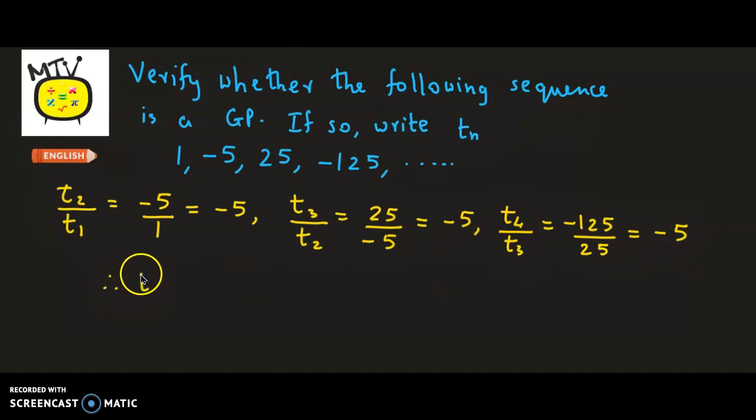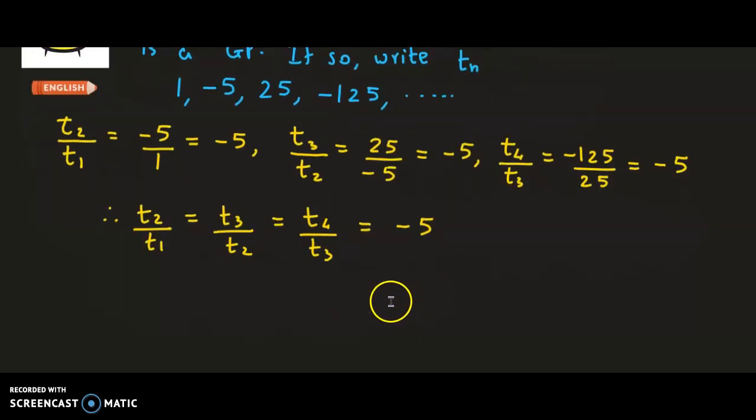Therefore, we can say T2/T1 = T3/T2 = T4/T3, and all these ratio values equal -5. Hence it is a GP. The given sequence is a geometric progression.